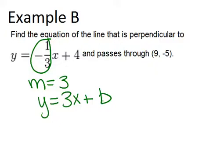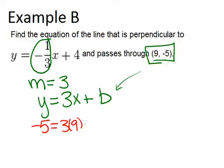In order to figure that out, I can plug in this given point for x and y in our equation here in order to solve for B. So if I do that, I have negative five equals three times nine plus B.